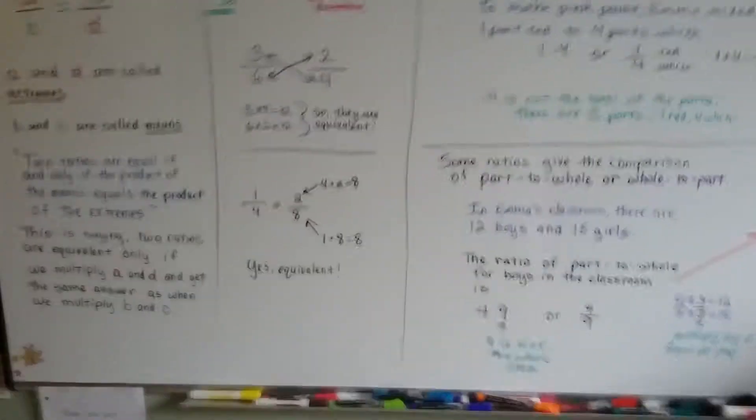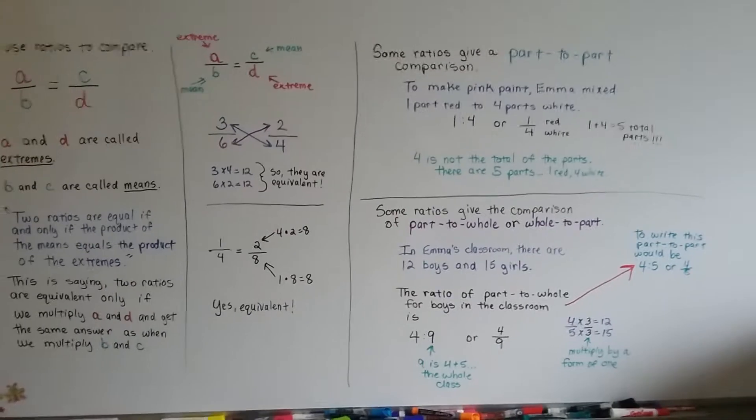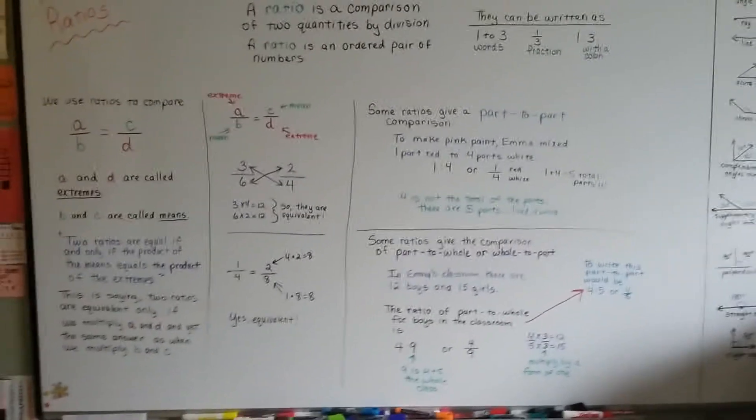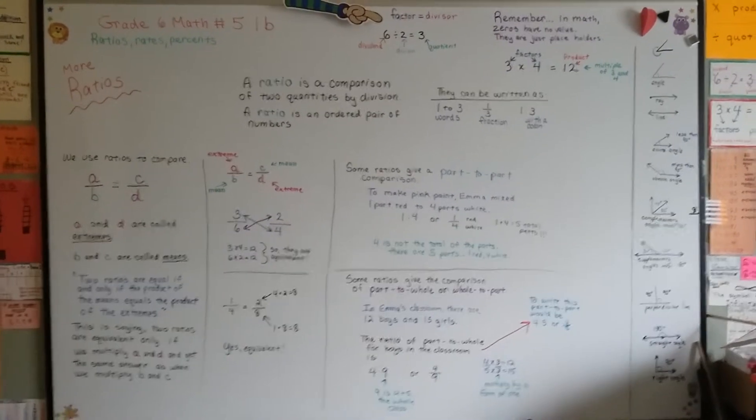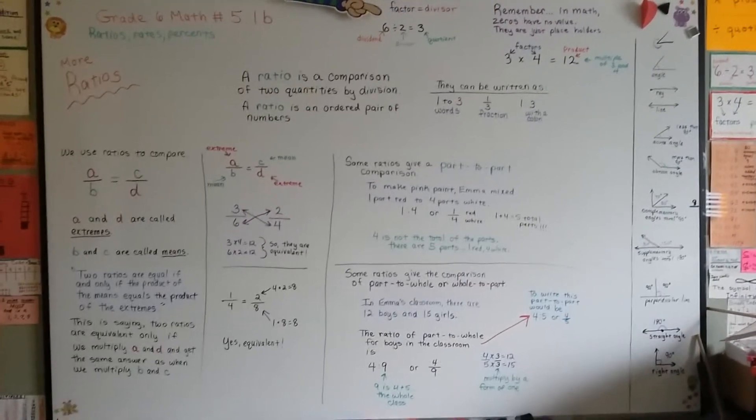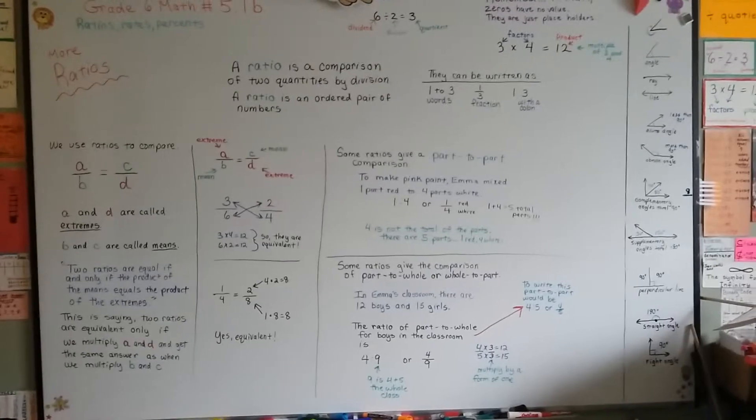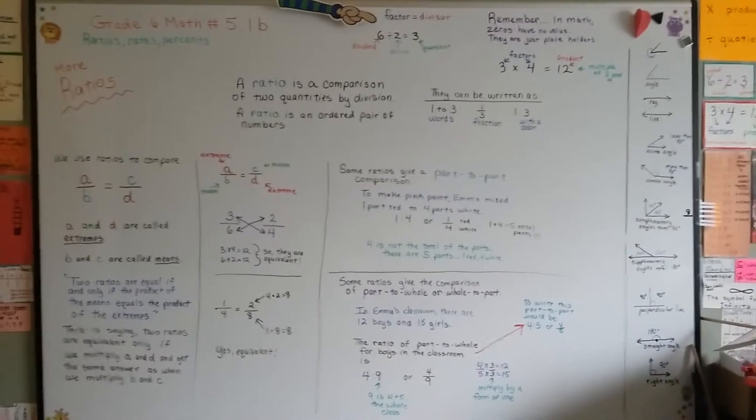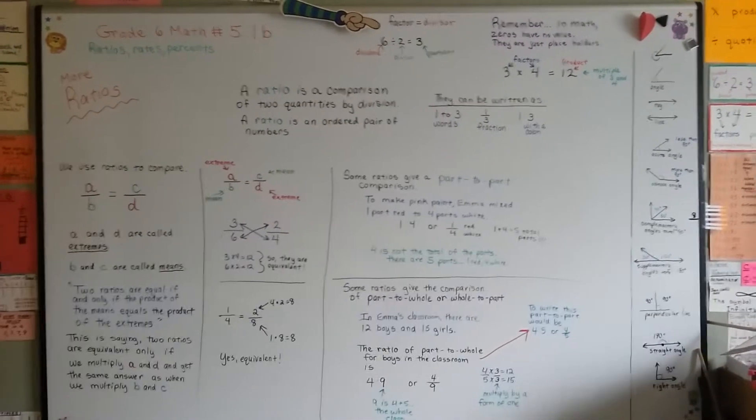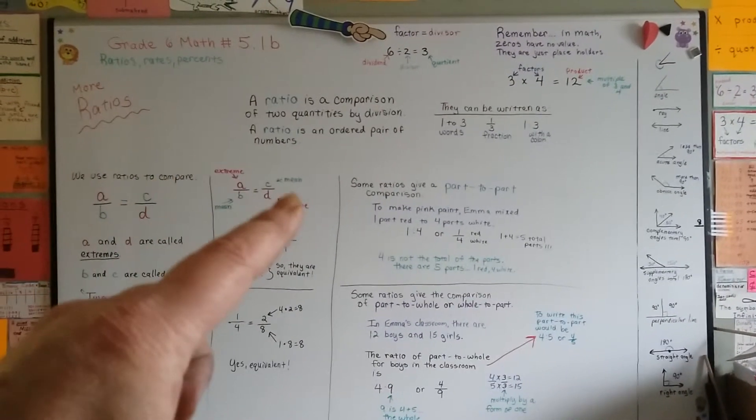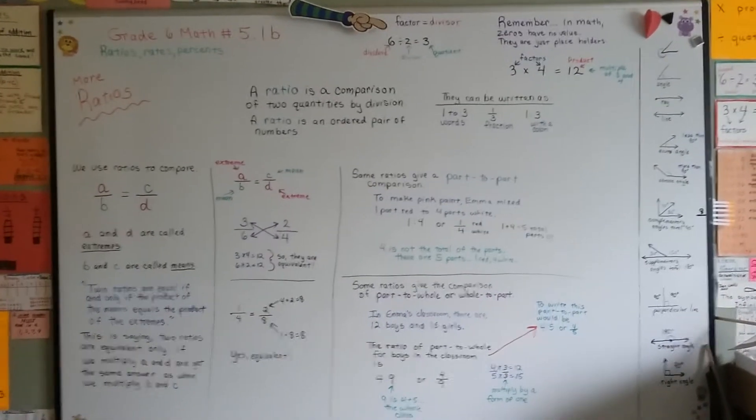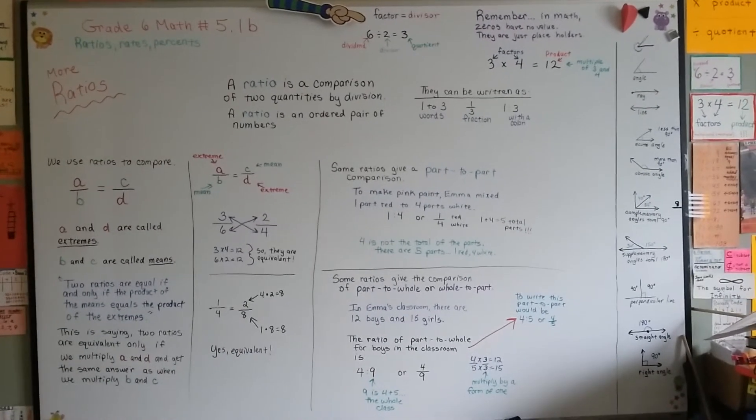So that's more on ratios. This is more than most 6th graders would know. This is going to be so helpful to you in 7th and 8th grade math, and it's even going to help you in high school because it's going to be something that the other kids are being taught and you already know. You know that you can crisscross multiply and you know what means and extremes are now. I'll see you next video. Bye.